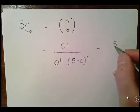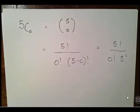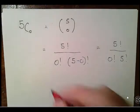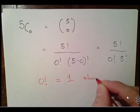So we have 5 factorial over 0 factorial times 5 factorial. Now, this is the important bit: 0 factorial is equal to 1, always. That's critical.